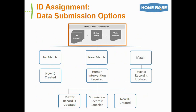We're going to step through the ID assignment process at a high level inside of UID, starting with the different types of data submission options. The first is the file upload or batch upload option — files containing one or more student records submitted directly to UID for processing all at once. Online entry is used by independent schools or home schools registering students with UID. The most common option is web services — an example of this would be PowerSchool.